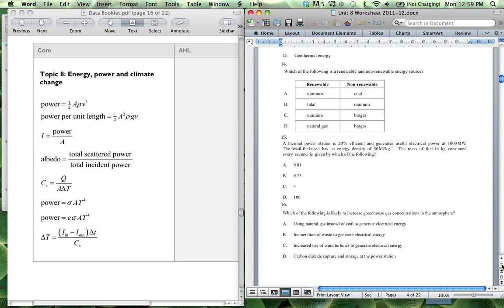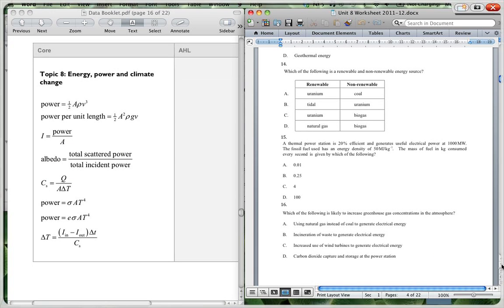Question 14. Which of the following is a renewable and non-renewable energy resource? So uranium is a non-renewable source. This is renewable, but it takes so long to form the coal that we say it's non-renewable. Tidal is renewable, and uranium is non-renewable. So this must be the correct answer. B is your correct answer there for that.